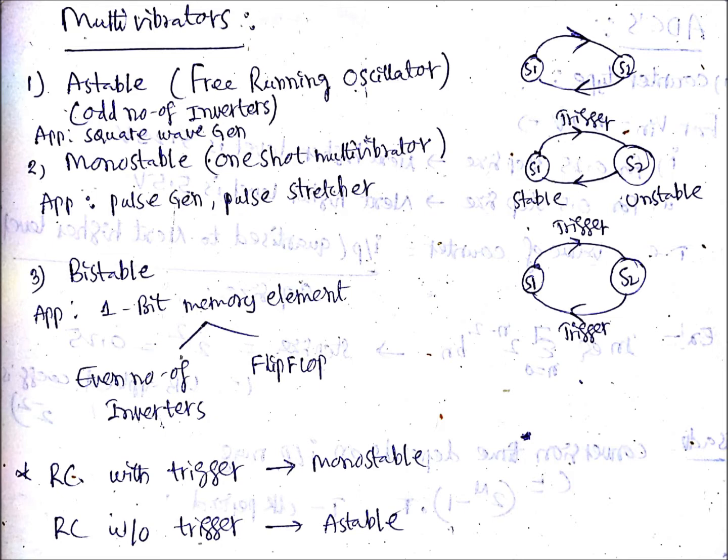For an astable multivibrator, you need to use an odd number of inverters. Why? Because the state should not be stable. Suppose odd number of inverters means one is an odd number, so consider one inverter. An inverter is an odd gate. The output is the complement of the input - if you give one as input, you get zero as output. That output becomes input to the inverter, then you get one as output again. It continues to complement, so you need to use odd number of inverters for astable.